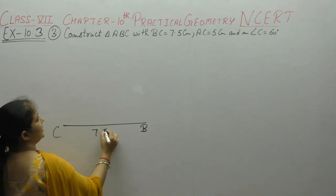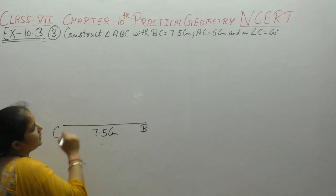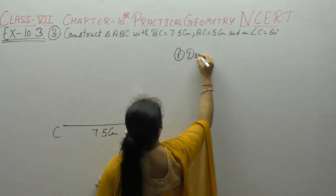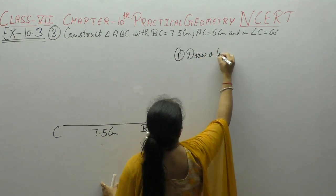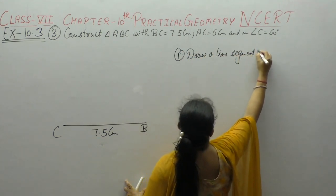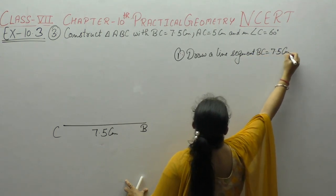BC 7.5 cm. Now draw a line segment. Step of construction, draw a line segment BC is equal to 7.5 cm.